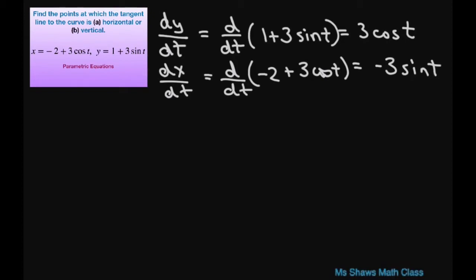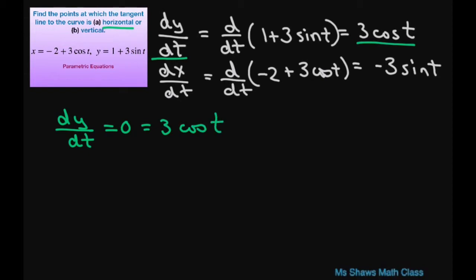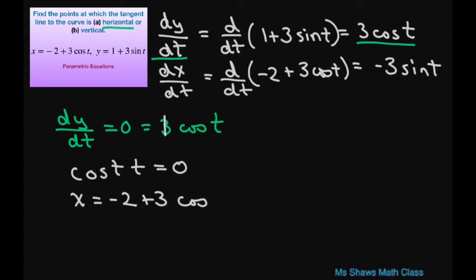Now let's do part a, which is the horizontal tangent. For the horizontal tangent, we set the derivative of y with respect to t equal to zero. That means 3 cosine of t equals zero, and dividing both sides by 3 gives cosine of t equals zero. Therefore, substituting into x equals negative 2 plus 3 cosine of t, we get x equals negative 2 plus 0, which equals negative 2.